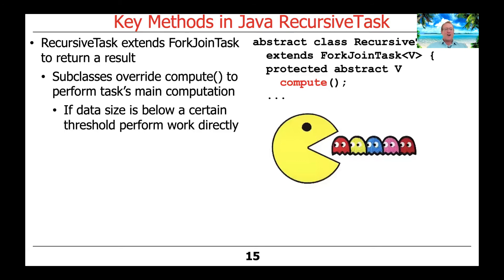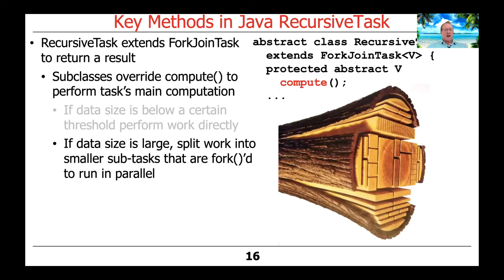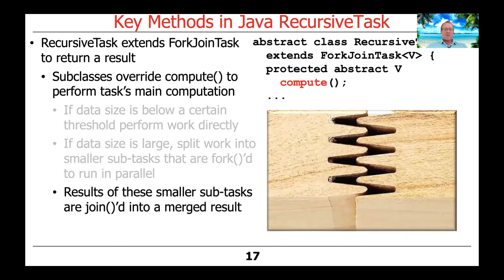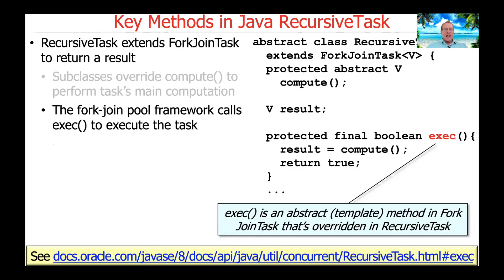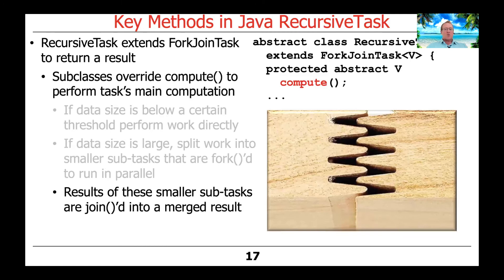As before, if the data size is below a certain threshold, compute will just do the work directly. Otherwise, it'll split the work into smaller subtasks and fork them to run in parallel. The results of these smaller subtasks are then joined together by compute into a so-called merged result, and that merged result is what actually gets returned from compute.